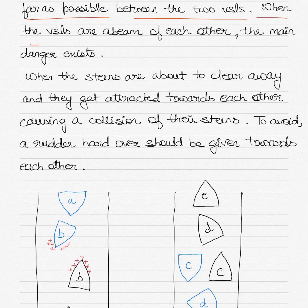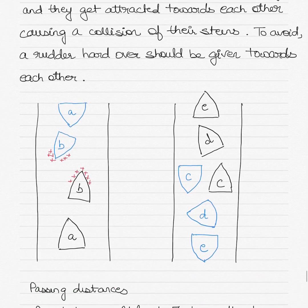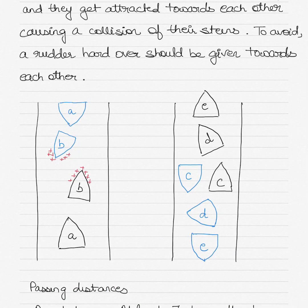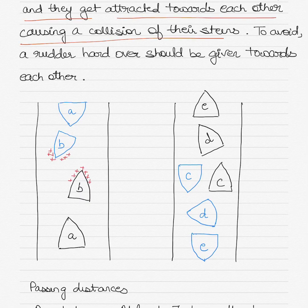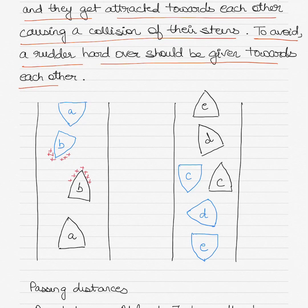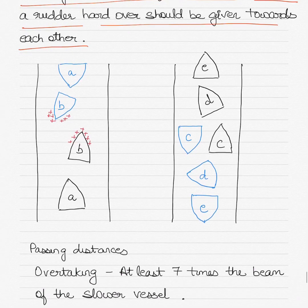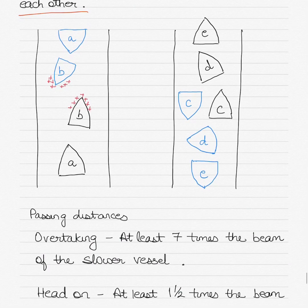When the vessels are abeam of each other, the main danger exists. The sterns are about to clear but get attracted towards each other, causing a collision of the sterns. To avoid this situation, a rudder hard-over should be given towards each other, as shown in the diagram.